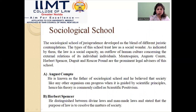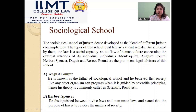Coming to the very last school — the sociological school. The sociological school of jurisprudence developed as a blend of different juristic contemplations. The previous analytical school equated law with science and separated law from other social science subjects such as polity, history, medicine, and arithmetic. The second school, the historical school, highlighted that law develops with the nation and disintegrates with the nation. The importance of custom, usage, and practices were very prevalent in the historical school.